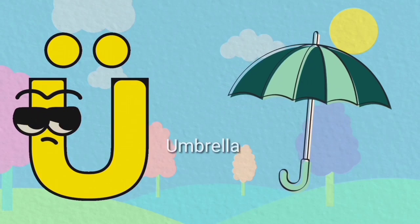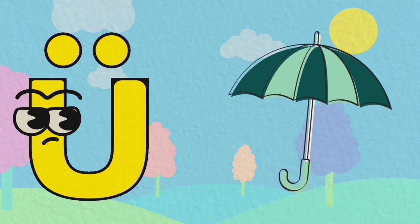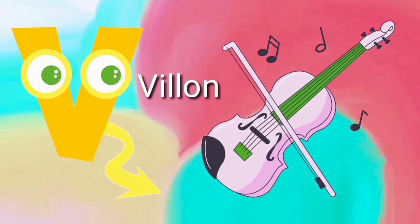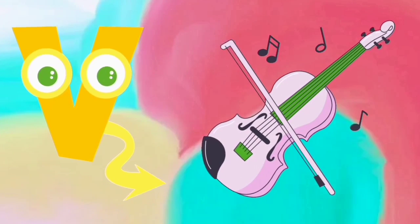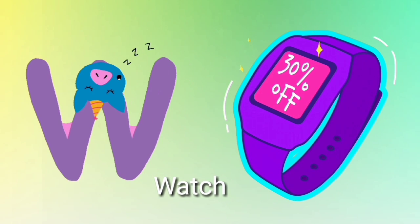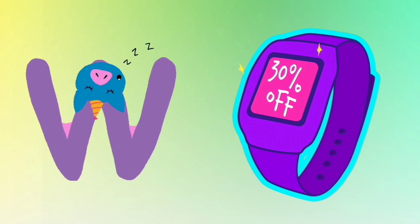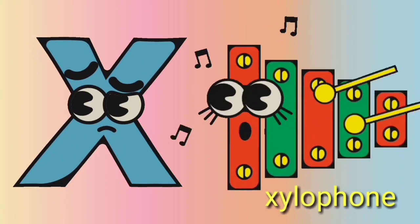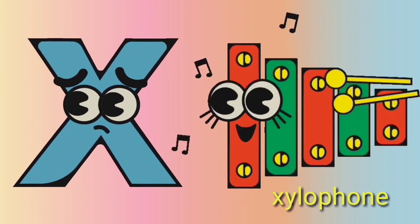U is for umbrella. U. Umbrella. V is for violin. V. Violin. W is for watch. W. Watch. X is for xylophone. X. Xylophone.